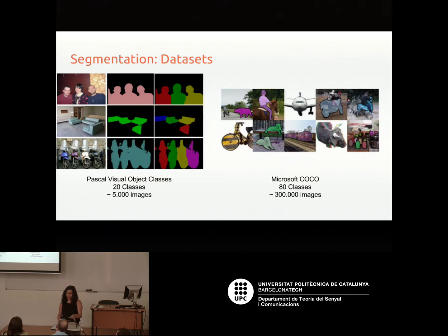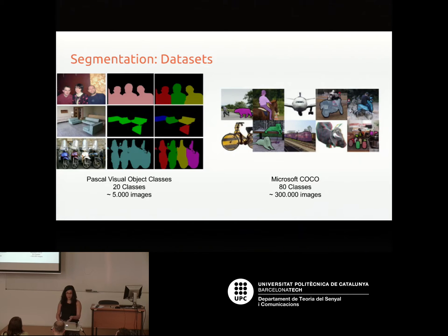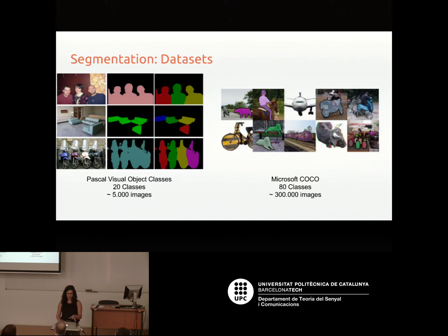We have these two well-known datasets. Pascal Visual Object Classes, which has only 20 classes and about 5,000 images. And then there's Microsoft COCO, that has more images and more classes, but we're nowhere near when compared to ImageNet. We have dense annotations — every pixel is labeled — but we don't have so many images. Just wanted to make that clear, that we're not in the same place exactly.